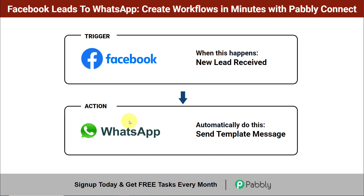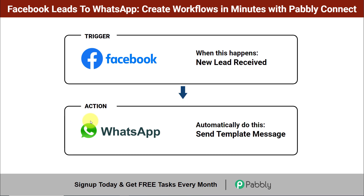To do that, we need to integrate the two applications, and this can be done using Pabbly Connect. The trigger will be Facebook Lead Ads, and the action application will be any app that can send WhatsApp messages — such as Interakt, WhatsApp Cloud API, WhatsApp by AISENSY, etc.